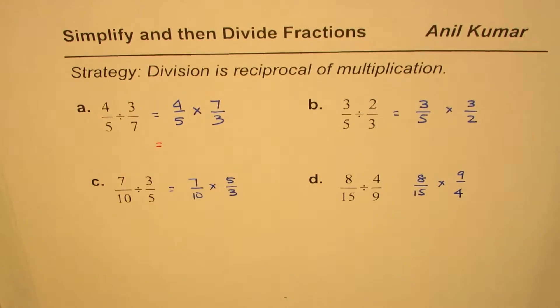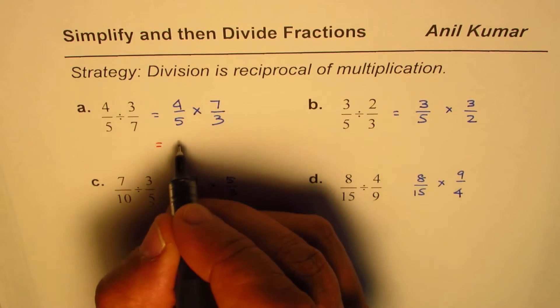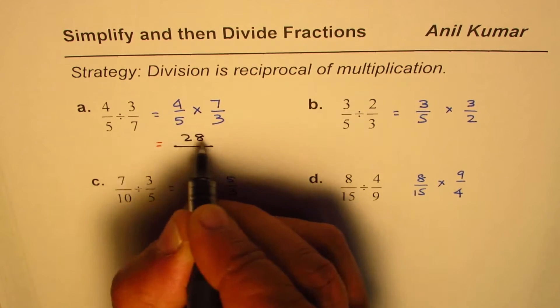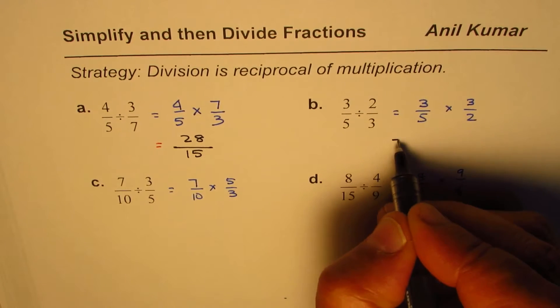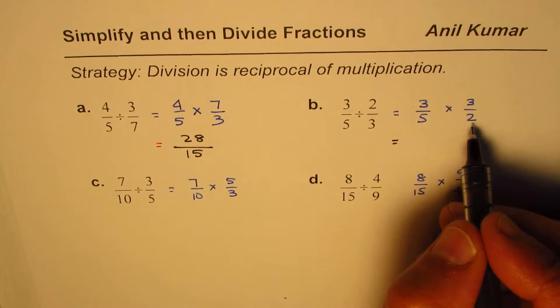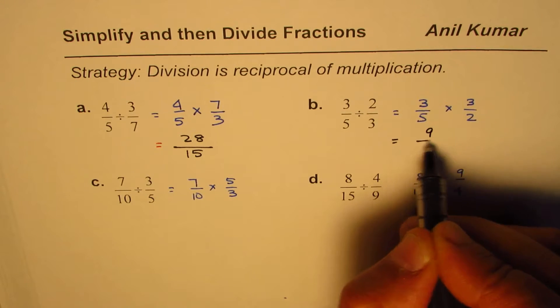That gives us 28/15 as our answer. For the second problem, we cannot simplify either. 3 × 3 is 9, and 5 × 2 is 10, giving us 9/10.